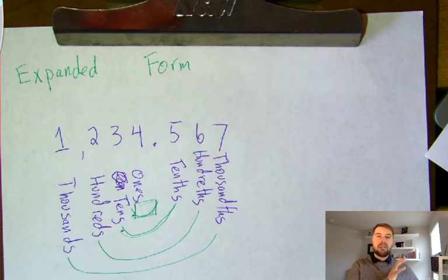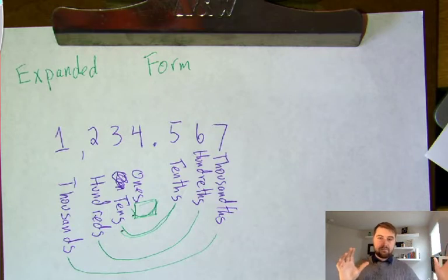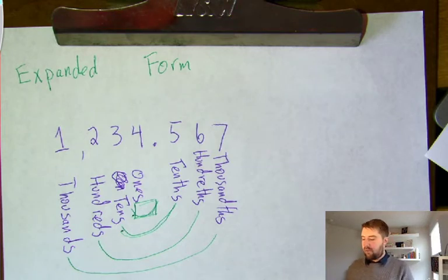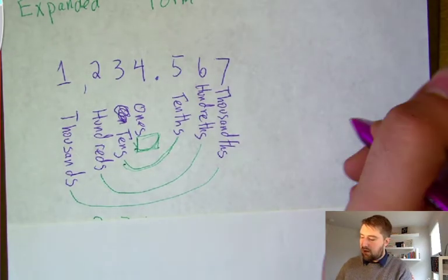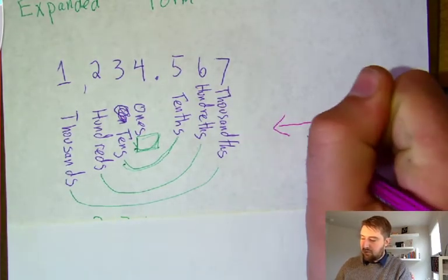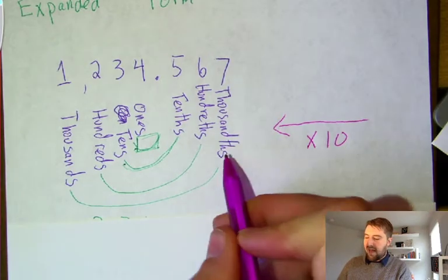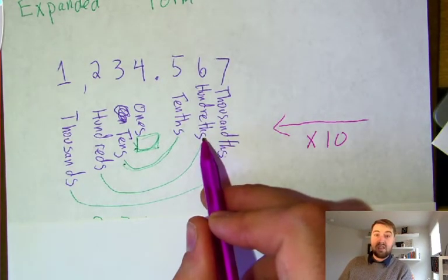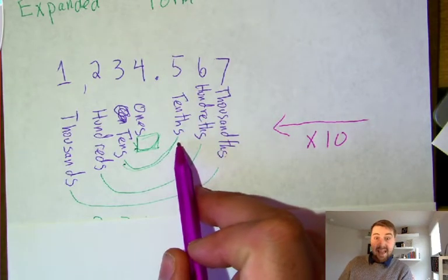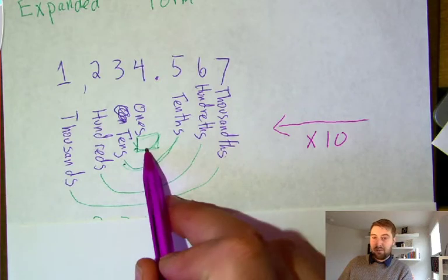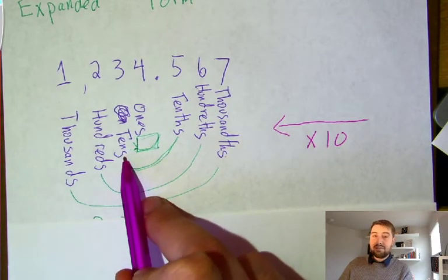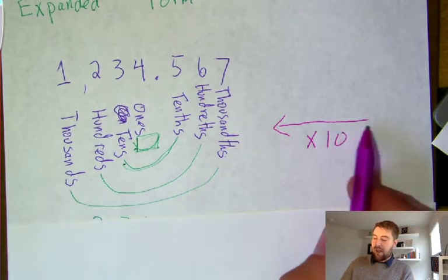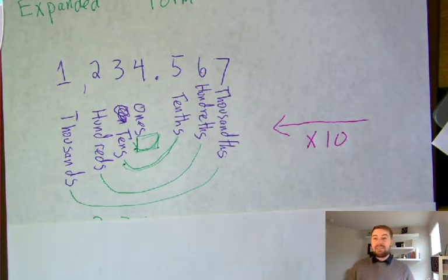Hundredths means one piece of a whole; thousandths is one even smaller piece of an even bigger whole. As we go right to left, each place value gets multiplied by ten: one-thousandth times ten is a hundredth, one-hundredth times ten is a tenth, ten tenths equals one. Then one times ten is ten, ten times ten is a hundred, and a hundred times ten is a thousand. Moving right to left, we multiply by ten.